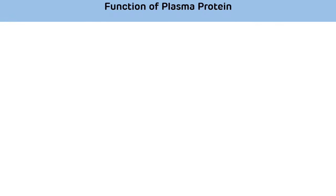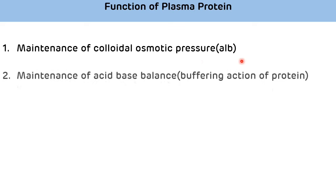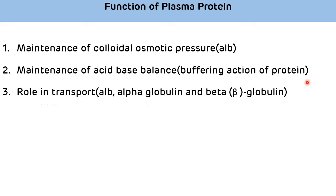Functions of plasma protein: the first and most important function is maintenance of colloidal osmotic pressure, which is mainly due to albumin. The second important function is maintenance of acid-base balance, due to the buffering action of proteins. The third important function is transport of various molecules that are not water soluble — albumin, alpha globulin, and beta globulin help in this. Albumin transports bilirubin, free fatty acids, metal ions like calcium and Cu²⁺, and various drugs.